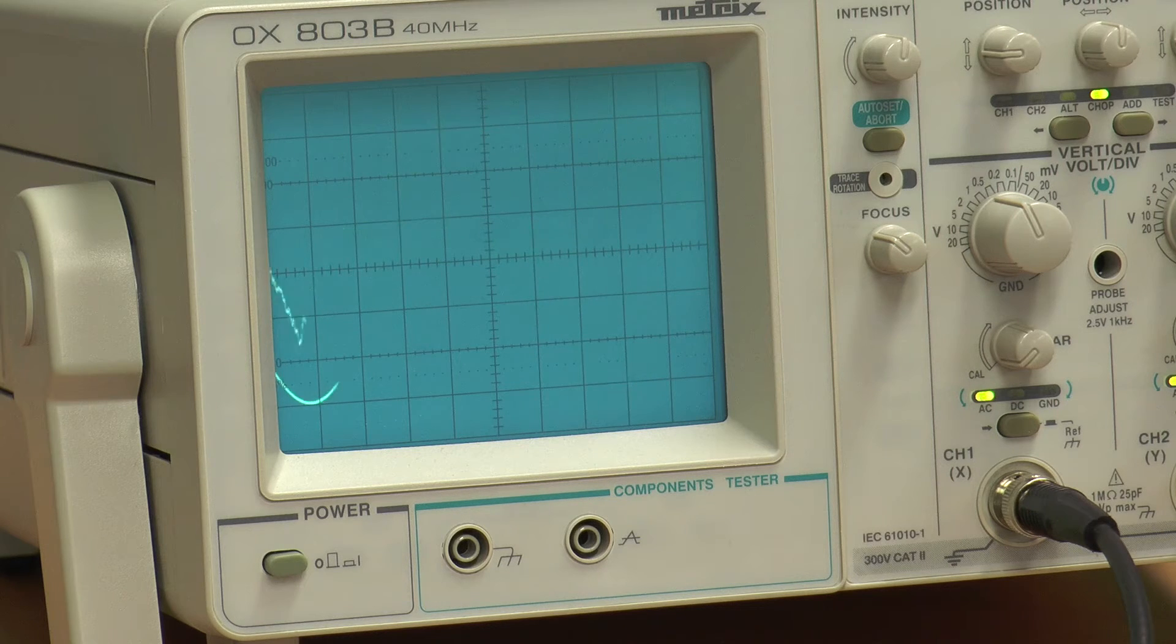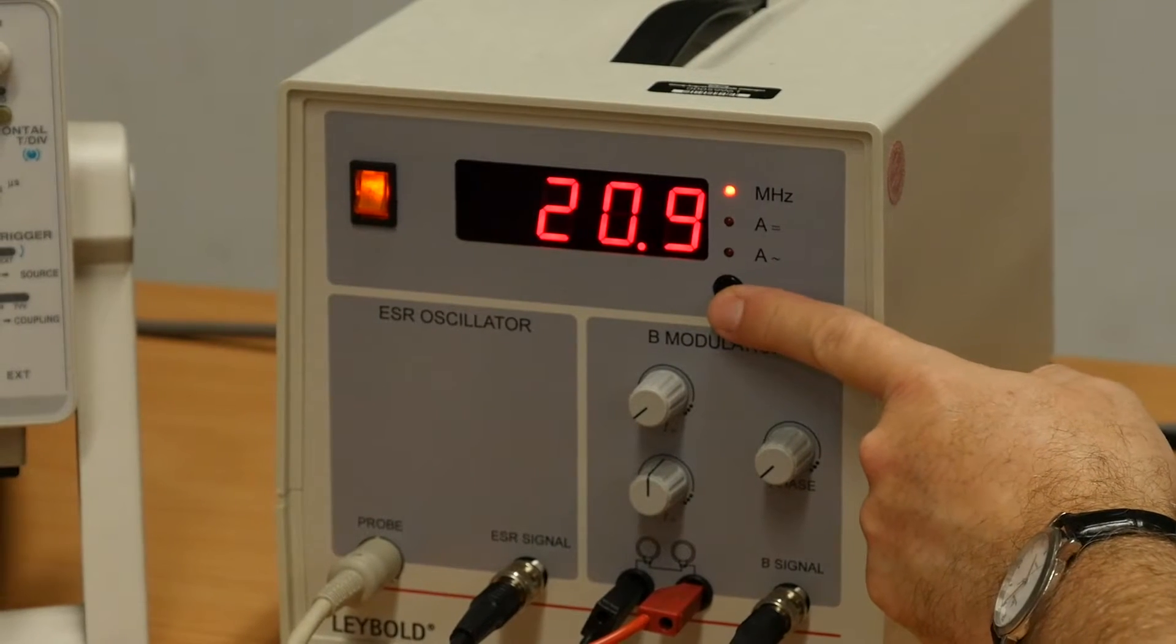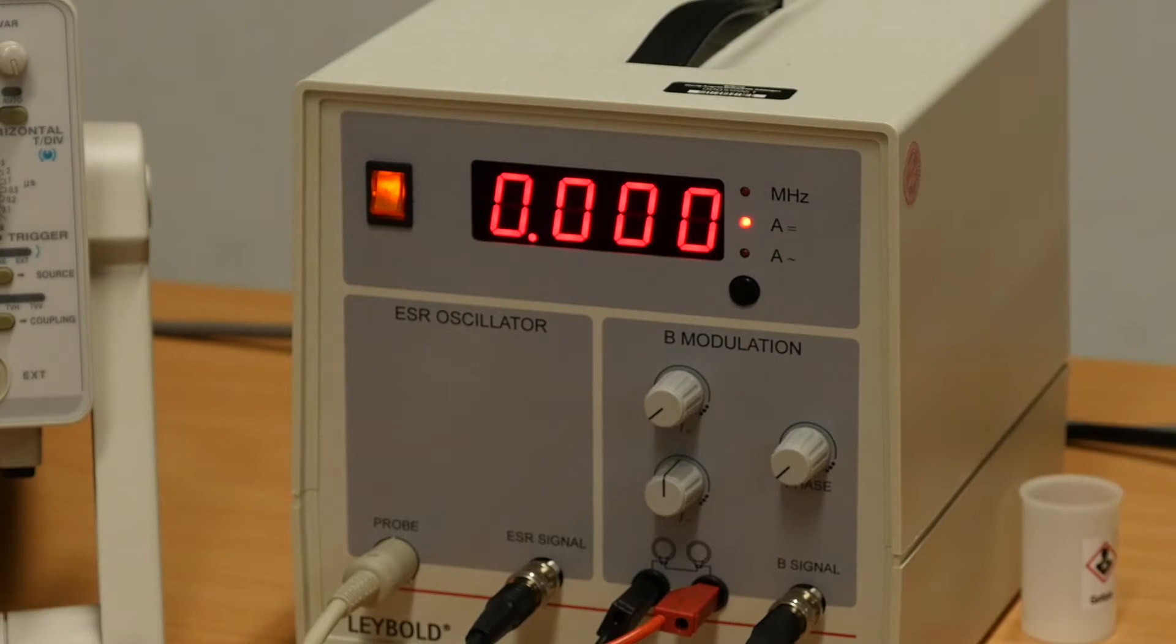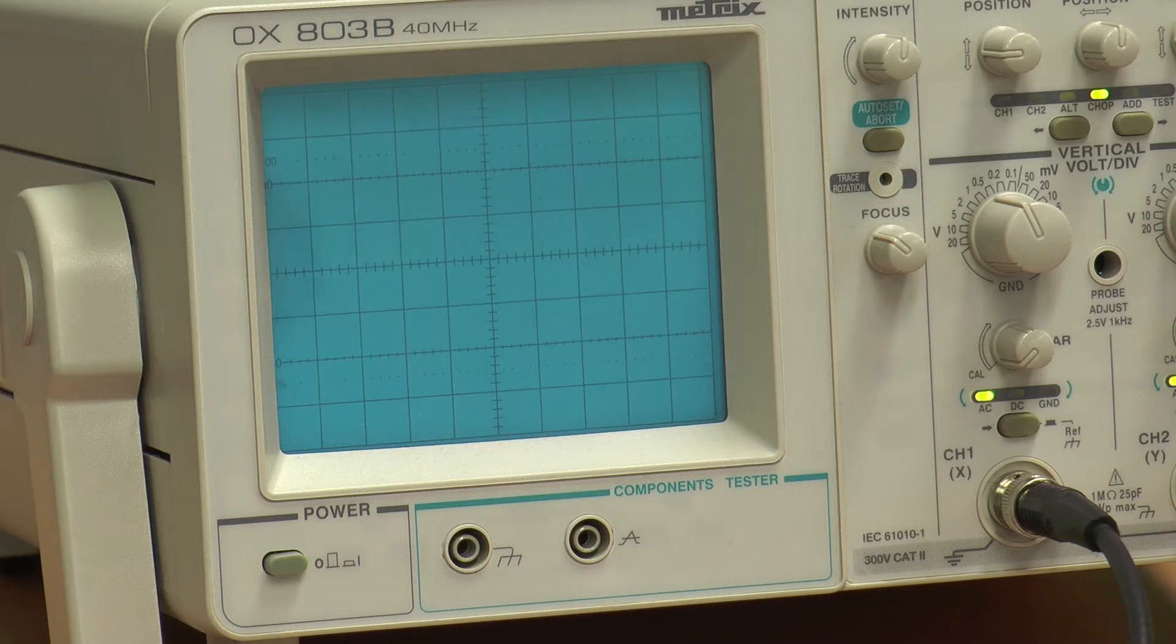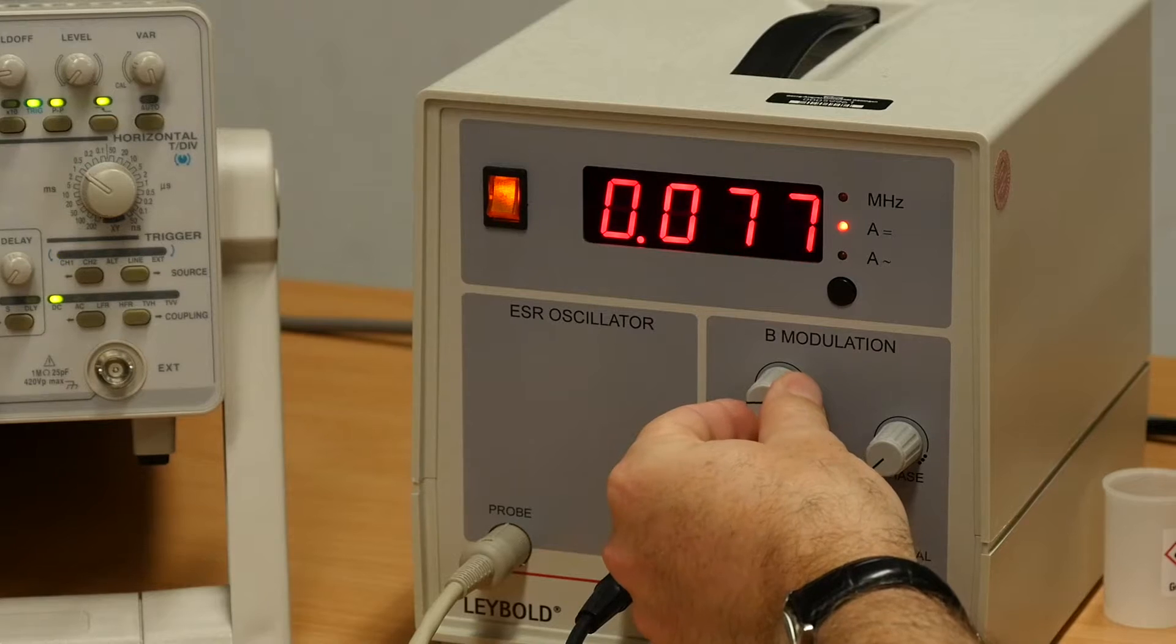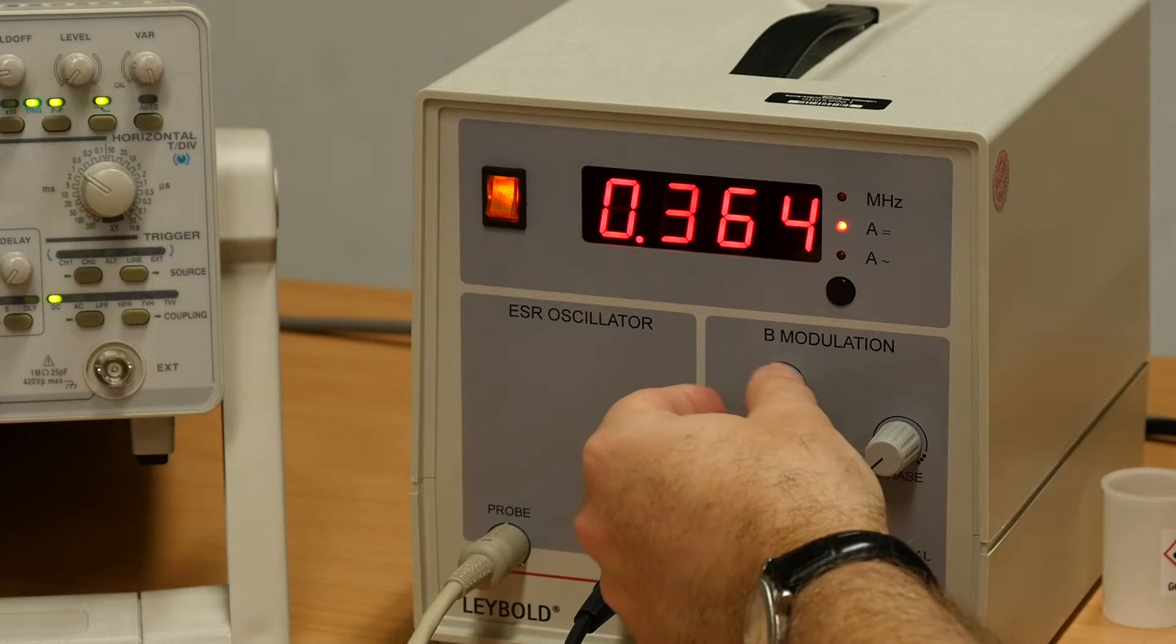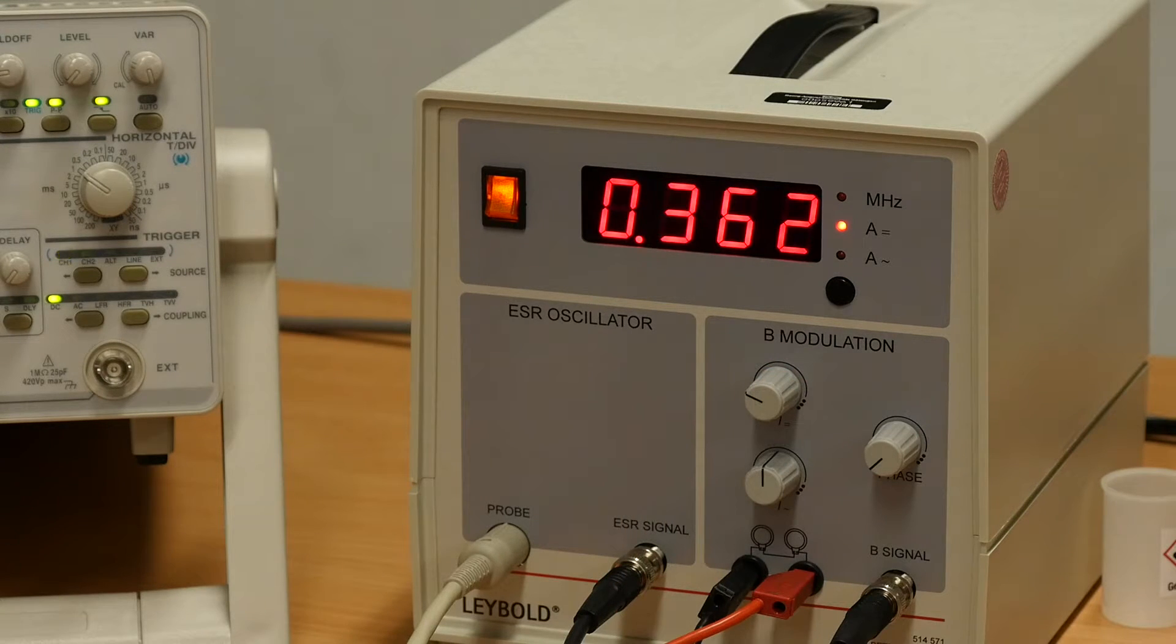Set the resonance frequency to 20 MHz, set the modulation amplitude to the middle position, and phase shift to 0 degrees. Adjust to resonance condition. With the oscilloscope in TY mode, view both signals and set the display on the ESR operating unit to show the DC current flowing through the Helmholtz coil.